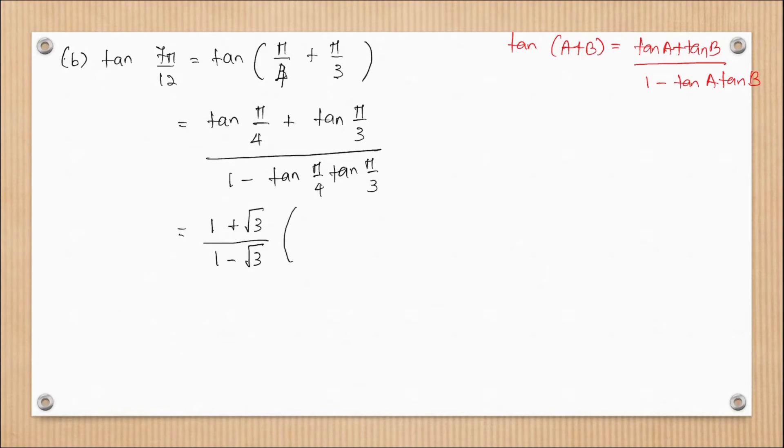And 1 minus √3. But this is not the simplest form. The simplest form, we have to multiply with the conjugate. And the conjugate of this is (1 + √3)/(1 + √3).